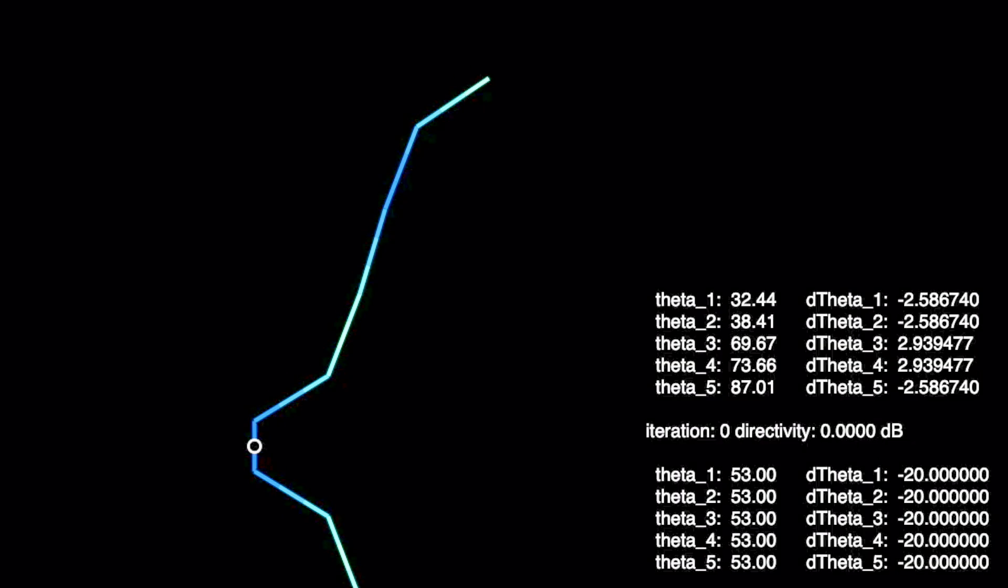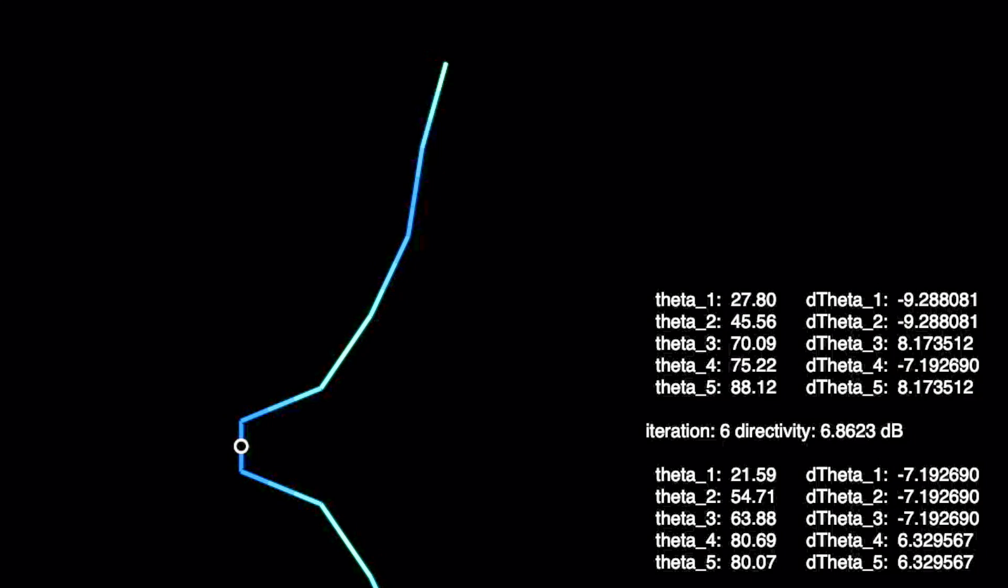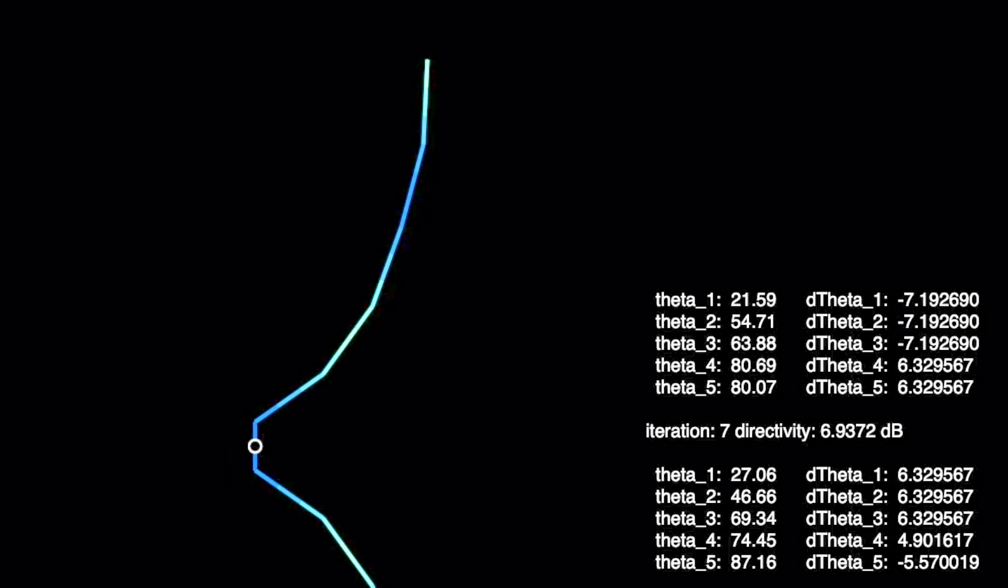Then I let the computer do its thing again. Having now 5 degrees of freedom it is taking a lot more computation time compared to the previous case with only two variable parameters.